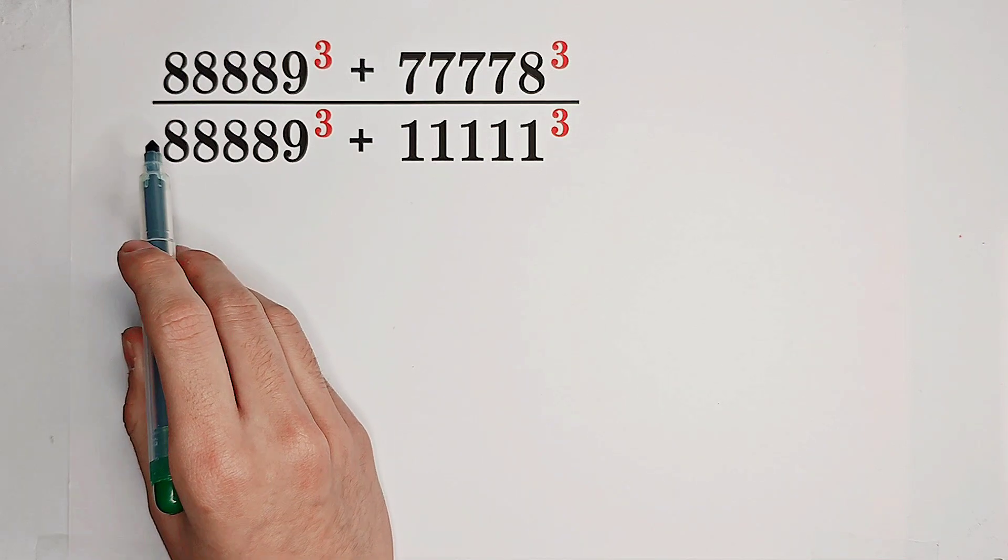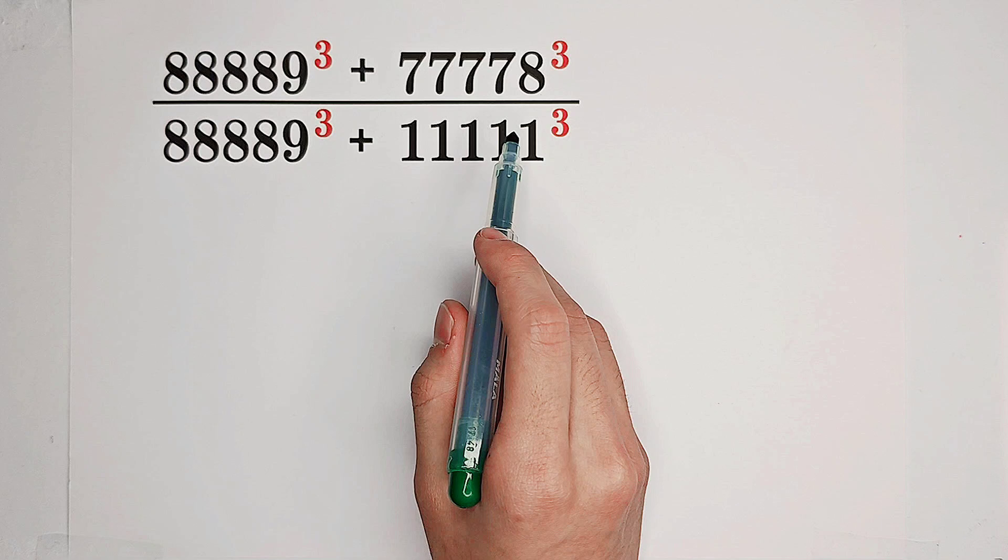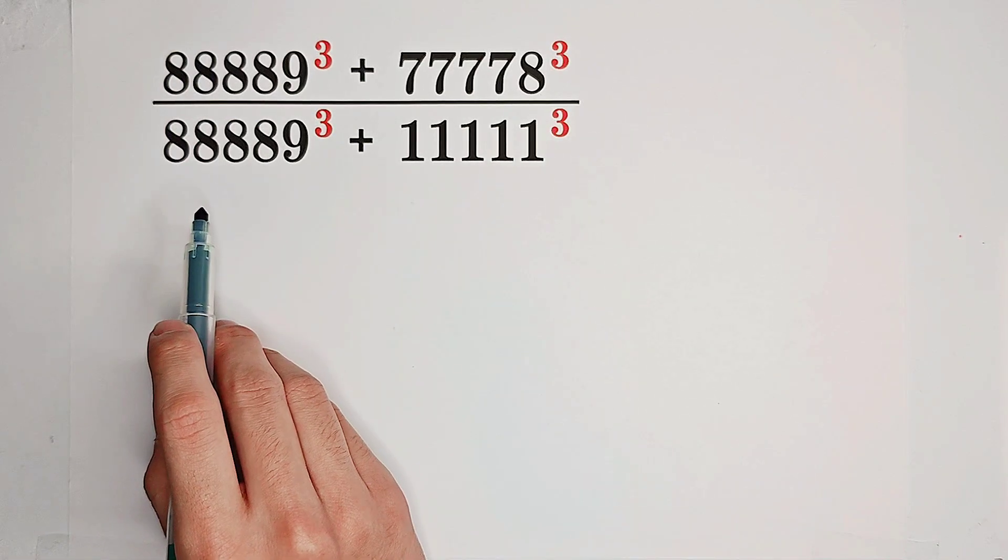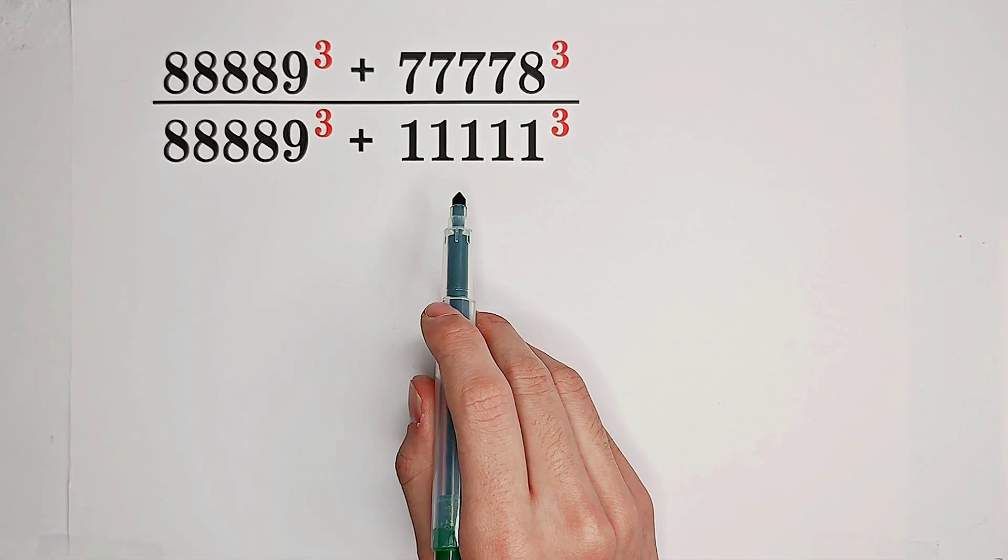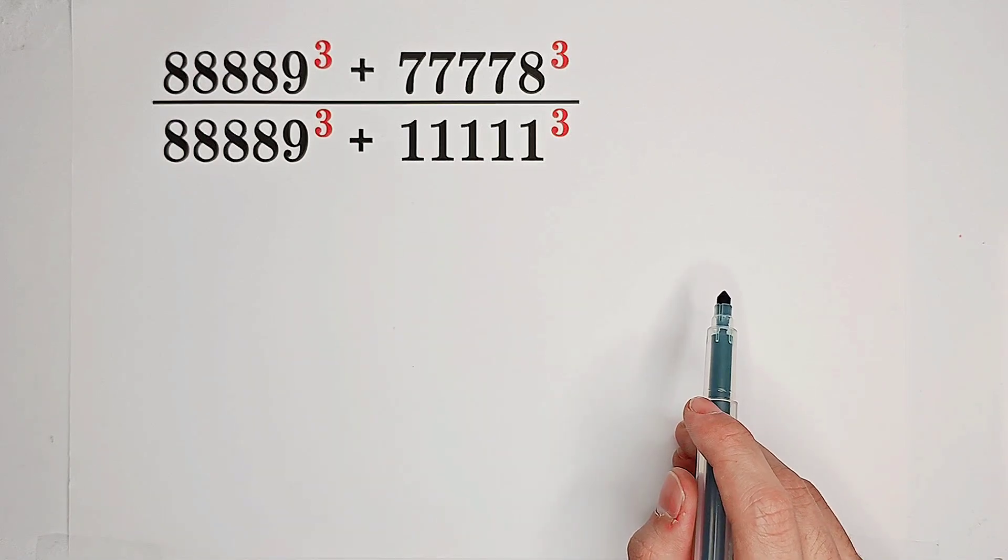Calculate 88,889 cubed plus 77,778 cubed over 88,889 cubed plus 11,111 cubed. Oh my god. Firstly, inspection.